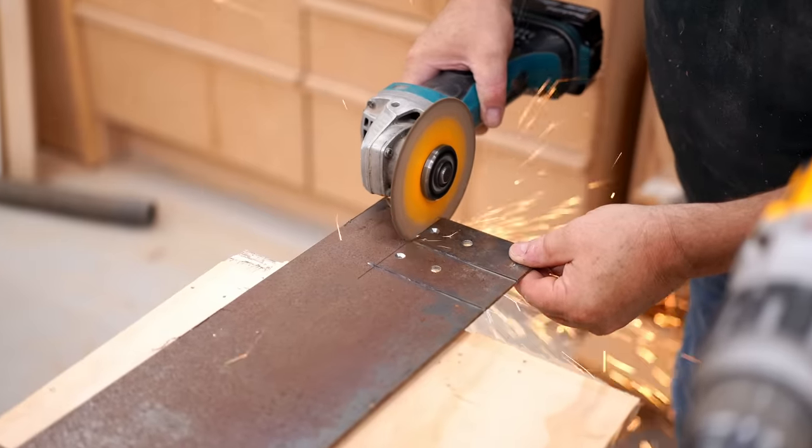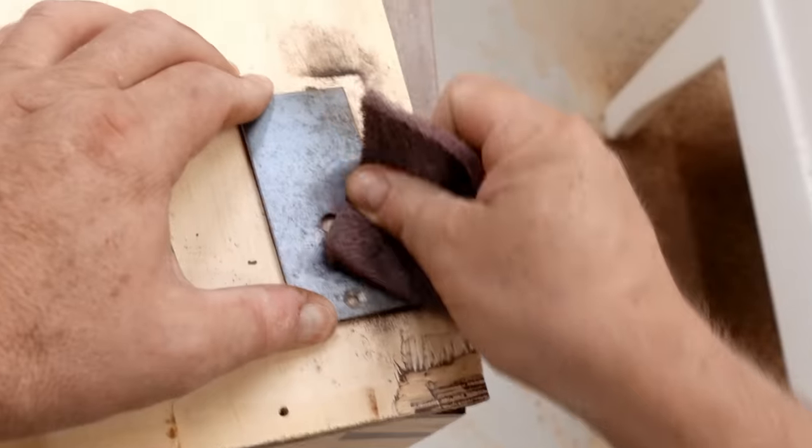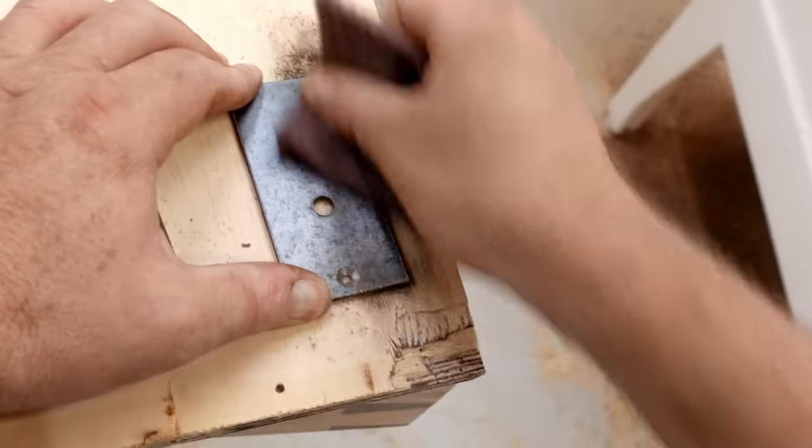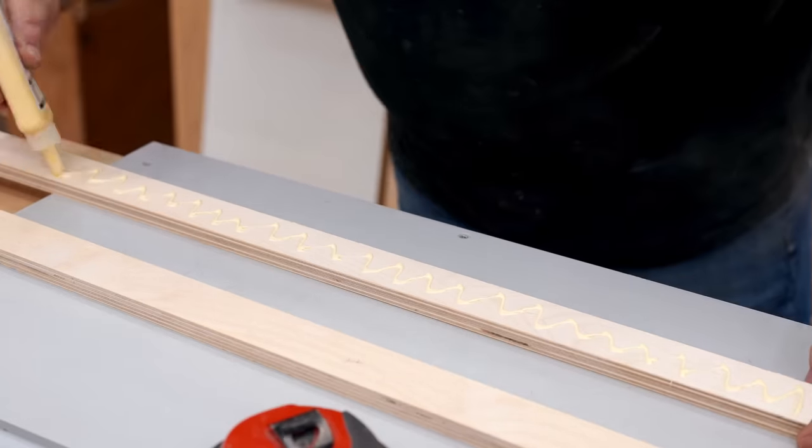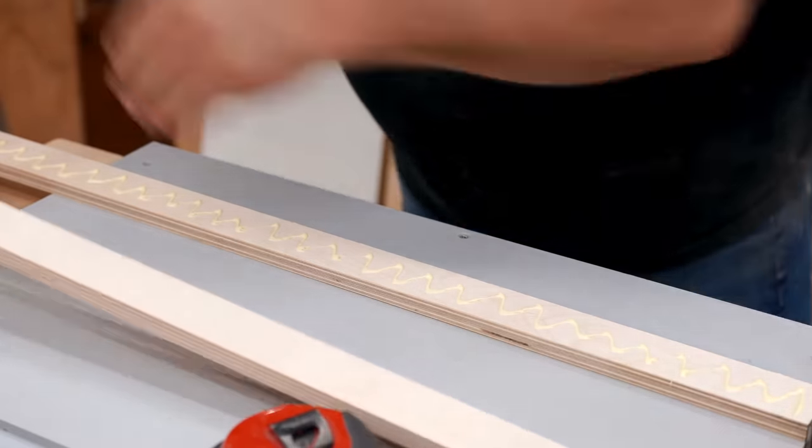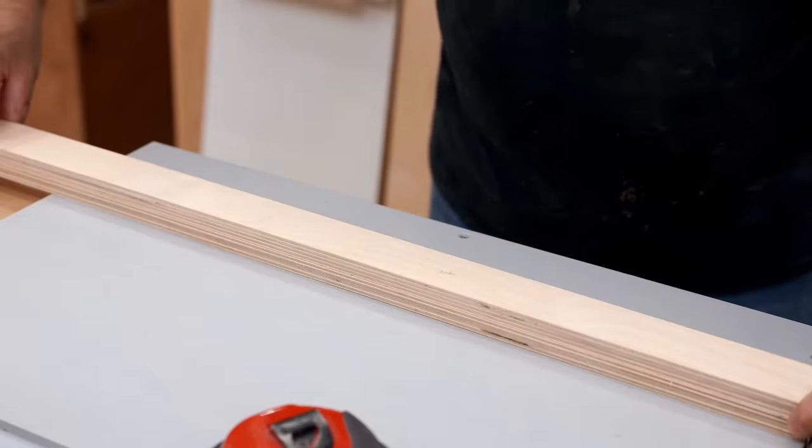Now I can start main assembly on the fence. Here I'm gluing the subtop to the top, and the top overhangs the subtop by three quarters of an inch on each end.